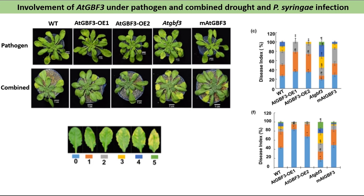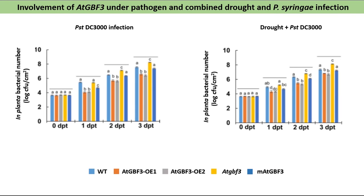To investigate the role of ATGBF3 under combined stress, wild-type, ATGBF3 overexpression, ATGBF3 mutant, and ATGBF3 complementation plants were subjected to pathogen and combined stress. Disease scoring showed more severely infected leaves and fewer non-infected leaves in ATGBF3 mutant plants, while overexpression plants showed more non-infected and fewer severely infected leaves under both pathogen and combined stress. In planta bacterial multiplication was significantly higher in mutant plants and significantly lower in overexpression plants under pathogen and combined stress.